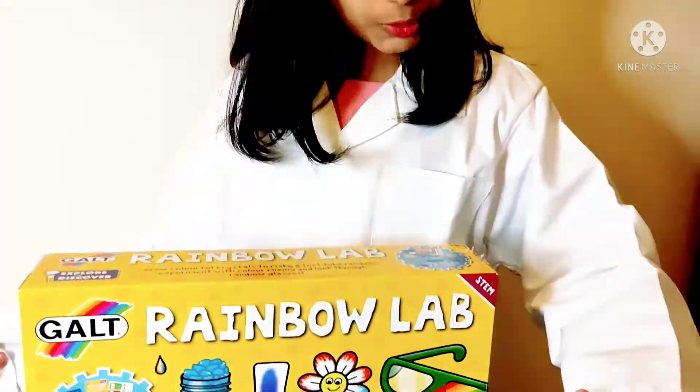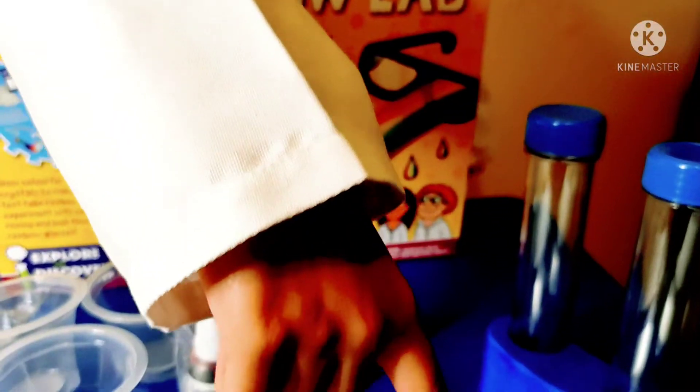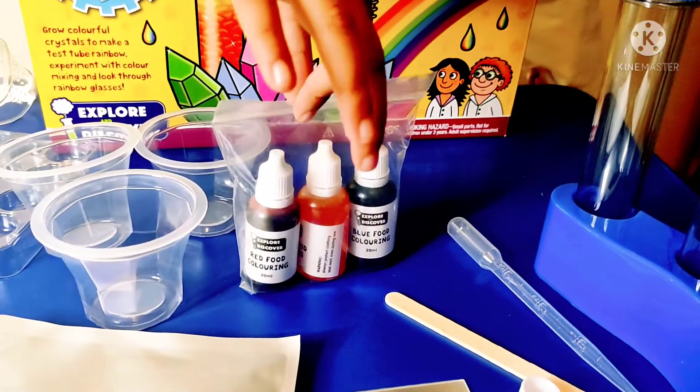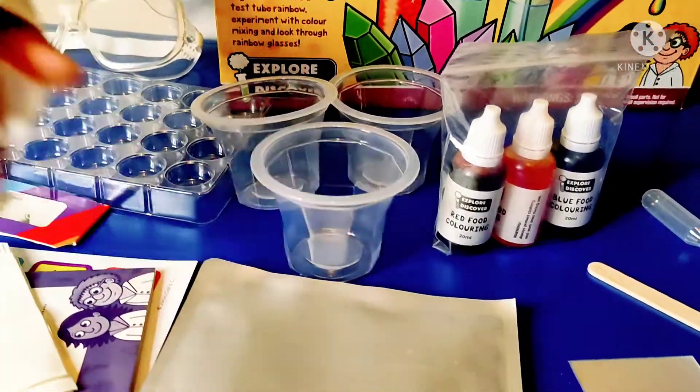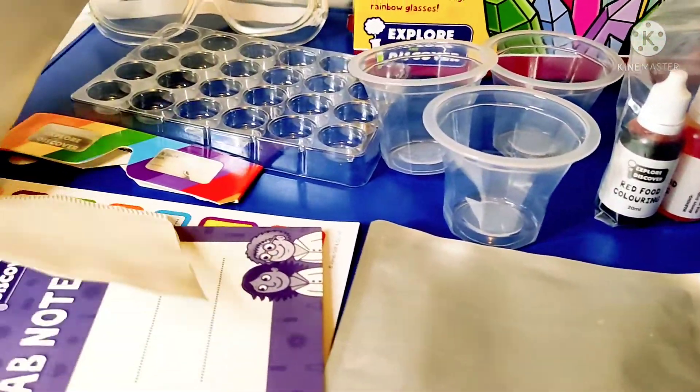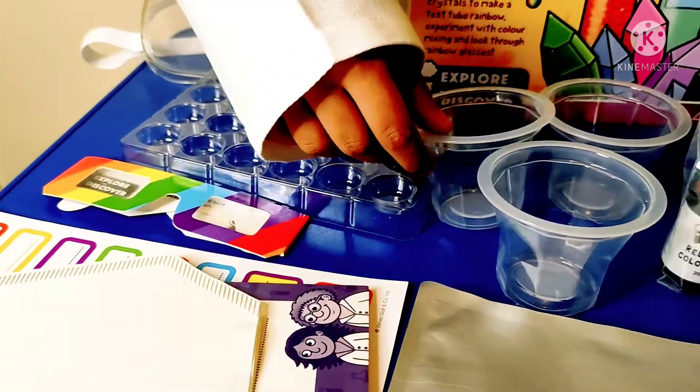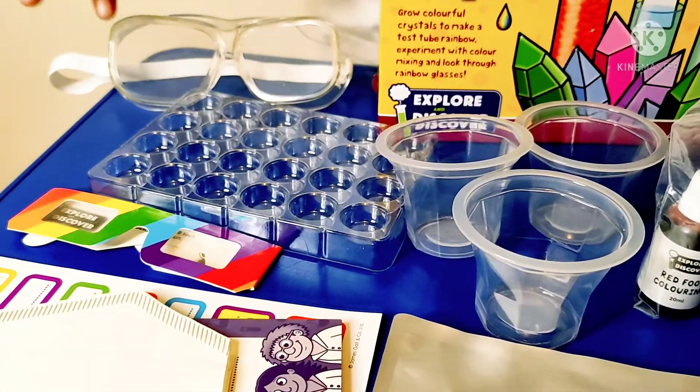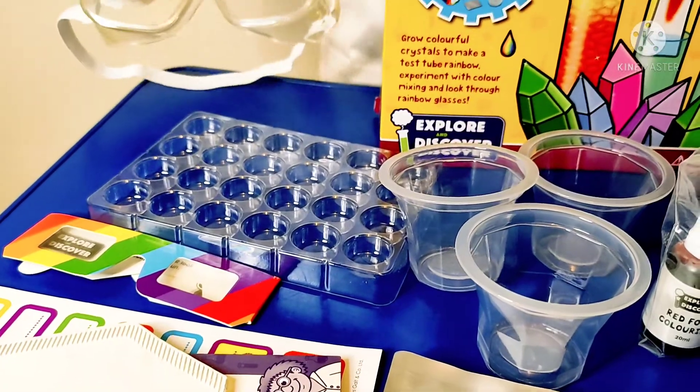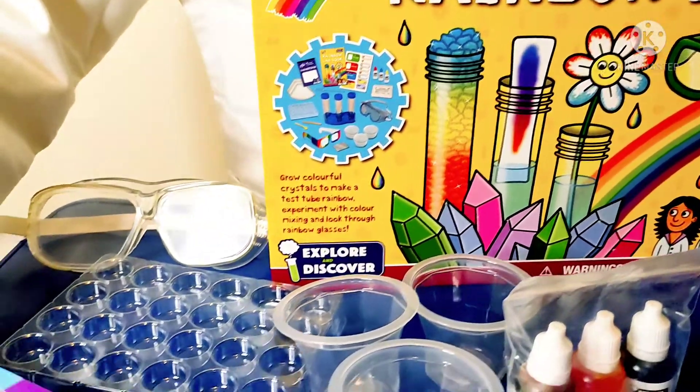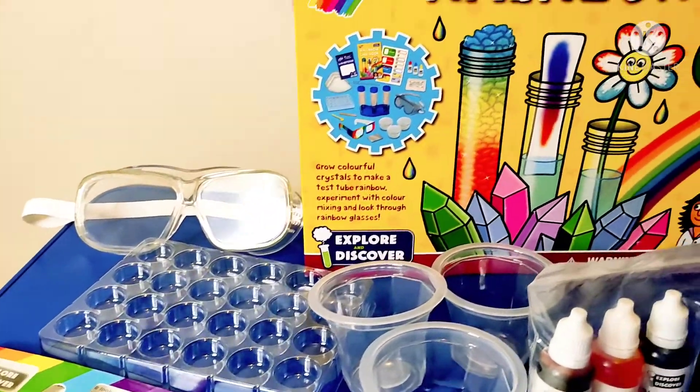So now I'll tell you what I got from the Rainbow Lab. We got test tubes, measuring spoon, stirring stick, food color, potassium, stickers, notepad, filter papers, cups, mixing tray, and goggles. Oh, almost forgot the rainbow glasses. That's about it.